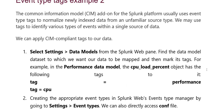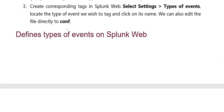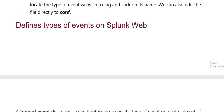For example, with the performance data model and CPU load object, the following steps apply: First, the tag is equal to performance and tag is equal to CPU. Second, create the appropriate event type in Splunk web by going to Settings > Event Types. You can directly access the configure file. Step three: create corresponding tags in Splunk web by selecting Settings > Event Types, locate that event type, tag it correctly by clicking on its name, and add it to configure. This defines types of events on Splunk web.